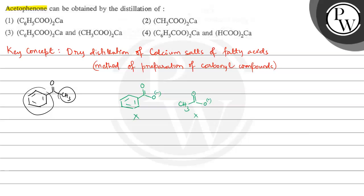Now let's talk about the third option. Here we have calcium benzoate and calcium acetate, so calcium benzoate and calcium acetate are two groups present - phenyl group and methyl group. So when this reaction occurs, we will have...